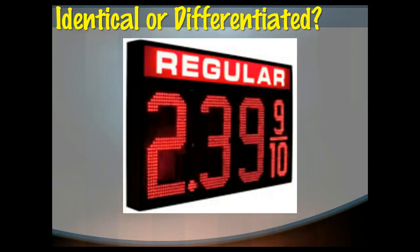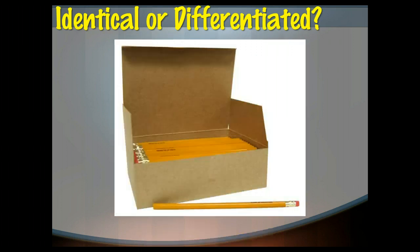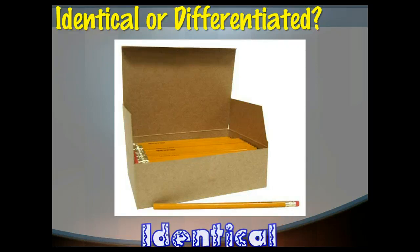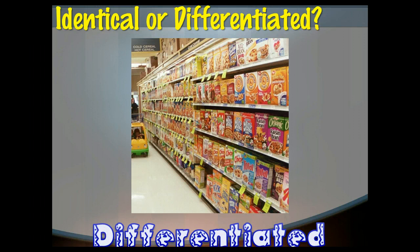Gasoline, generally speaking, is an identical product. It doesn't matter where you get your gas from, it's all the same. Number two pencils are identical. It doesn't matter what your number two pencil is, who manufactured it. It's still got an eraser, it's still got graphite lead, it's still got a wood base. It's the same thing. So we would say that those are identical. Whereas breakfast cereal would be differentiated because you have lots of different types. You've got corn versus wheat versus sugary versus ones with fruit. So those would all be differentiated.